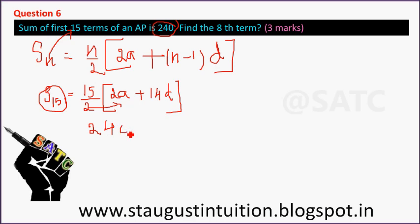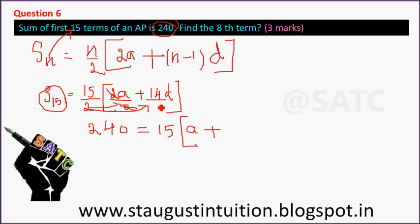240 is equal to 15 into bracket 2A plus 14D, divided by 2. Simplifying: 15 divided by 2 gives us 2A plus 14D. Further simplifying the 14D term gives 7D.